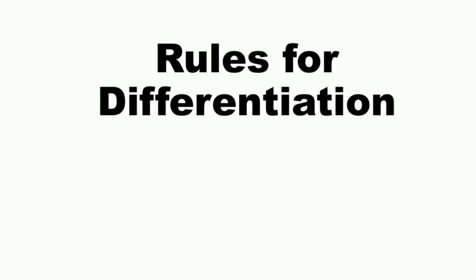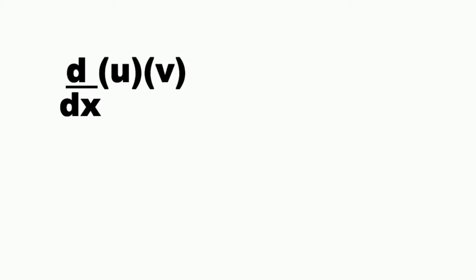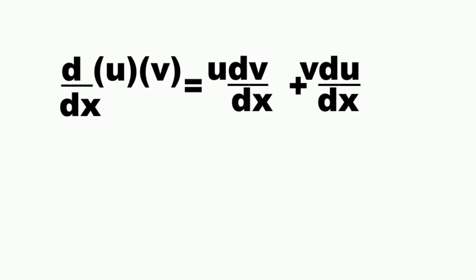Rules for differentiation. This time we are going to discuss the product rule. The product rule states that the derivative of function u times function v with respect to x is equal to function u times the derivative of v with respect to x, plus function v times the derivative of u with respect to x — or dy over dx equals u dv over dx plus v du over dx.